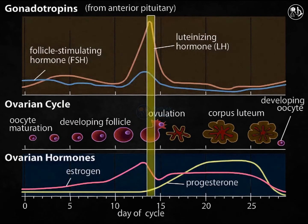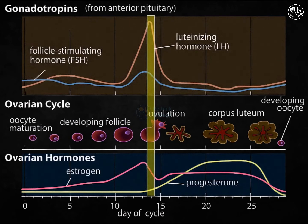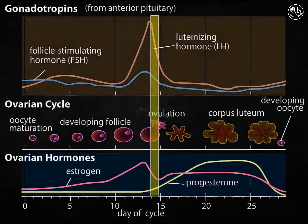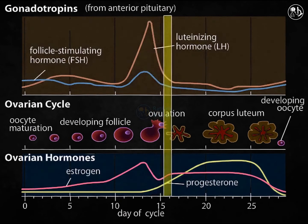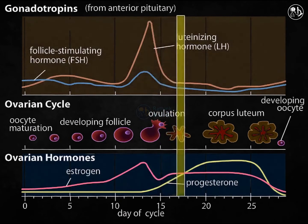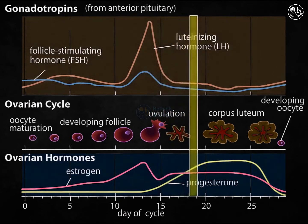On day 14, LH reaches its highest level. The developed follicle ruptures and releases the egg as a result of the LH surge, which is the process of ovulation. The remaining follicle cells are subsequently triggered by LH to develop into the corpus luteum, which secretes estrogen and progesterone for the remaining two weeks of the cycle.